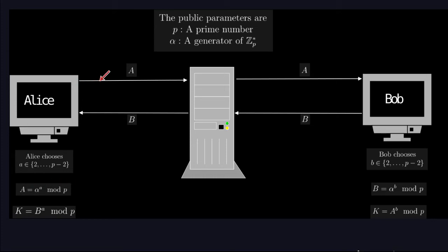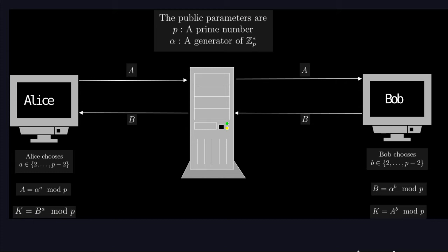That number A is transmitted through the insecure channel and Bob gets it. Bob does exactly the same thing: he takes a random number between 2 and P-2, takes alpha to that power modulo P, and gets a number we call capital B. That capital B goes to Alice through the insecure channel. Alice can then take B to the power A modulo P to get shared key K. Bob does the same: he takes A to the power B modulo P, and gets exactly the same K.